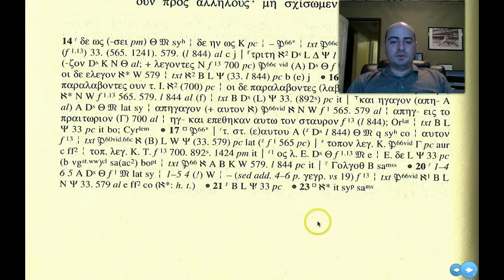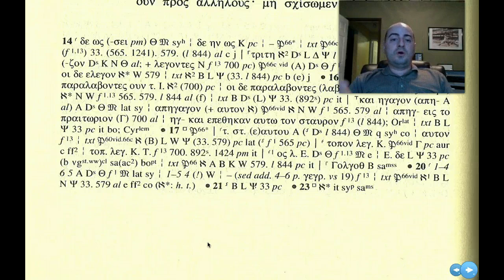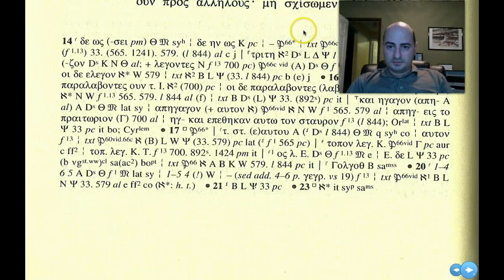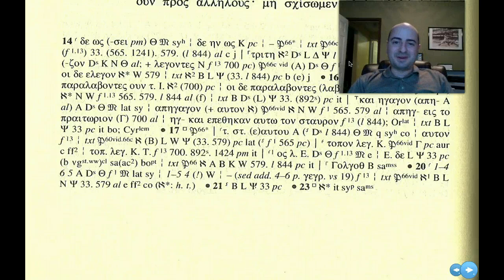And obviously what you can do is — at the beginning of this Greek New Testament, it has a legend, and it shows you what all the different symbols mean — like this D and the L and the delta and this funny-looking symbol here. These letters and numbers all mean something. And if you ever want a PhD in the New Testament, you'll have to memorize all this stuff.